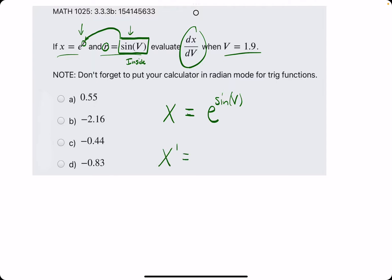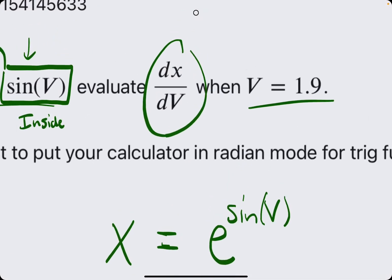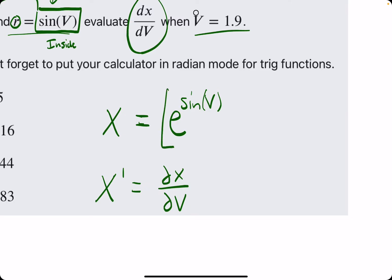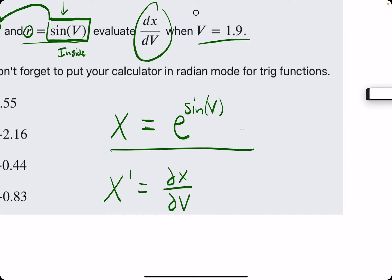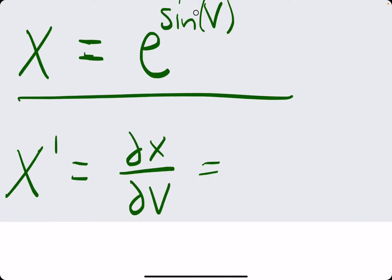So, let's find the derivative, x prime, which is equivalent now to dx over dv, what we're looking for, because when we find the derivative of this, the only variable we see is v. So, this function x is in terms of v. So, when we find the derivative of x in terms of v, we have dx over dv.